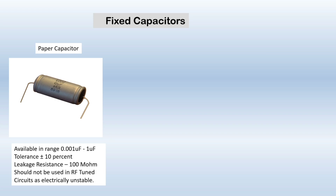First we have paper capacitor. This capacitor consists of very thin alternate layers of metal foil and paper, and the paper is dipped in oil. It is available in the range of 0.001 microfarad to 1 microfarad and has a tolerance of plus or minus 10%, meaning its value may vary about plus or minus 10% of the specified value. It has a leakage resistance of 100 megaohms. Since this paper capacitor is not electrically stable, it should not be used in RF tuned circuits.